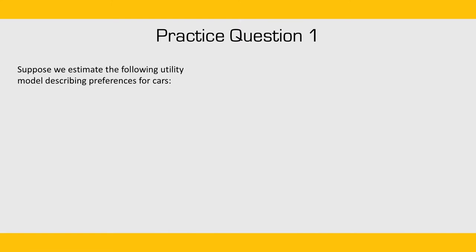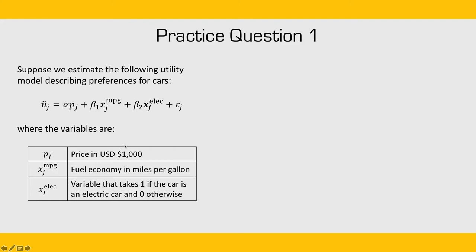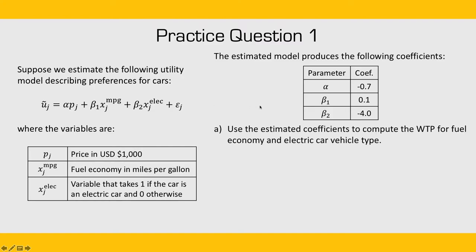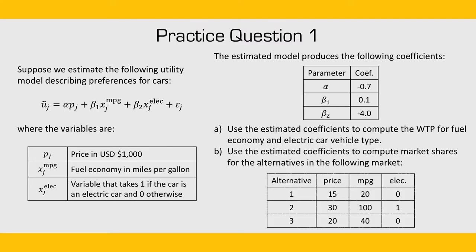Let's do some practice questions. Suppose we estimate a utility model describing preferences for cars, where p is price in thousands of dollars, xmpg is fuel economy in miles per gallon, and xelec is a dummy variable equal to one if the car is electric and zero otherwise. With estimated coefficients for alpha, beta1, and beta2: Part A asks you to compute willingness to pay for fuel economy and the electric vehicle type. Part B asks you to use those coefficients to compute market shares for a given set of alternatives, where each row is an alternative and each column is an attribute.